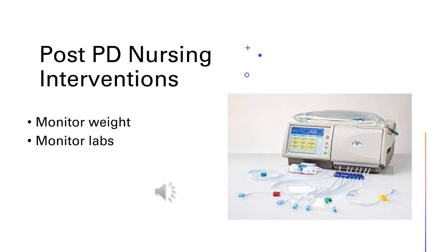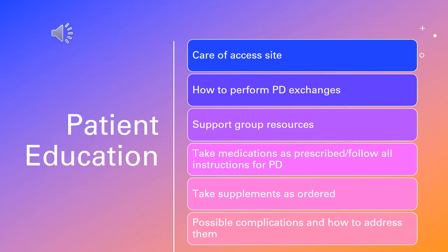Post peritoneal dialysis, we monitor weight and labs — we want to make sure BUN and creatinine are coming down and electrolytes are within normal ranges. We monitor weight to make sure we don't leave extra fluid on the patient and that they are losing some fluid. For patient education, we teach care of the access site to decrease chance of infection, how to perform their peritoneal dialysis exchanges, give them support group resources, teach them to take medications and supplements as ordered, and teach them about possible complications and how to address them — like milking the catheter for a clot, changing positions, and troubleshooting inflow/outflow issues.